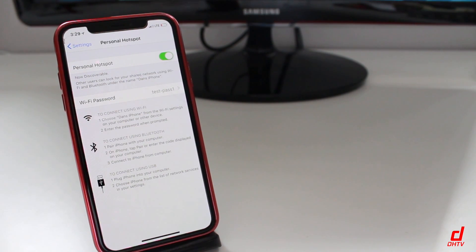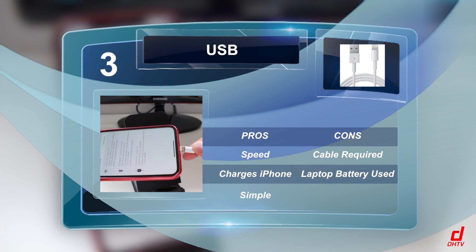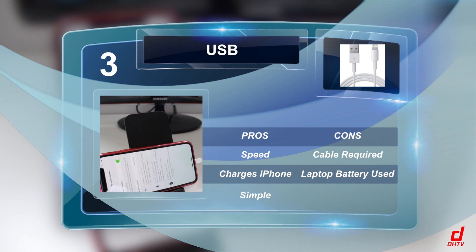On the plus side for Bluetooth, it's not going to burn through as much battery as the Wi-Fi connection. The last option, USB: this is a great method for a few reasons. It gave me decent speeds — some people report better or the same as Wi-Fi. It charges your device as you're using it, and it's very simple to connect — just plug it in and you're connected. On a Mac it works out of the box; on Windows you may need some configuration. The downsides are that you have to carry a cable around, and it will drain your laptop's battery a bit quicker since it's charging your phone.